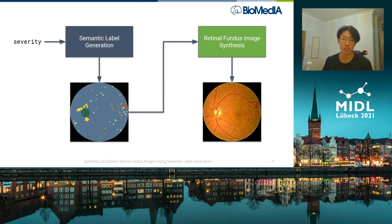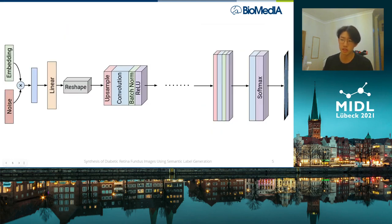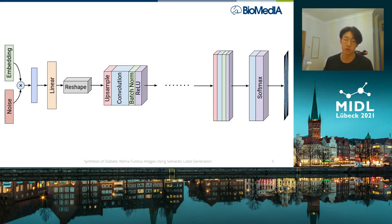The way we ended up approaching this was using an ACGAN to generate class-conditioned semantic labels at a resolution of 256 by 256, which were then upsampled to 512 by 512. This is the general architecture of the ACGAN generator. We actually use a softmax function in the final layer in order to yield a probability distribution of each pixel belonging to a particular class — whereas in a conventional GAN you might see a tanh or sigmoid at the end. To yield the semantic label itself, we can just take the argmax of this.